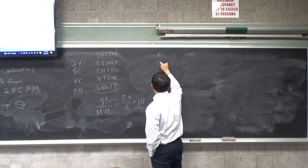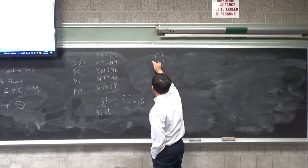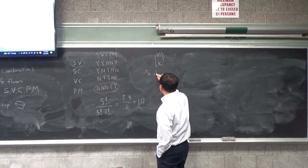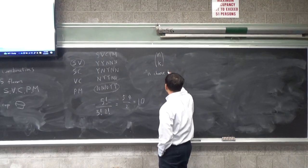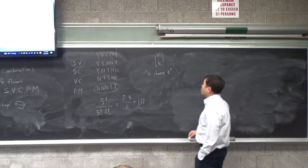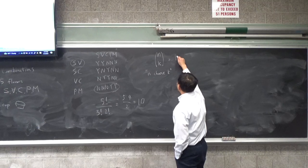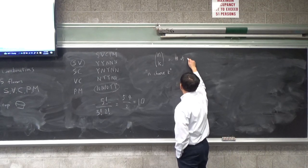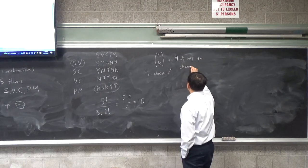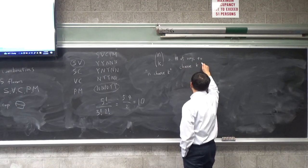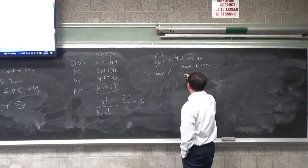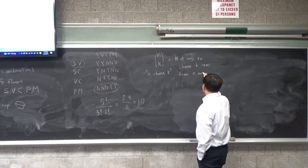This is called the combination, written as n choose k. It's read 'n choose k,' and it means the number of ways to choose k items from n available items.